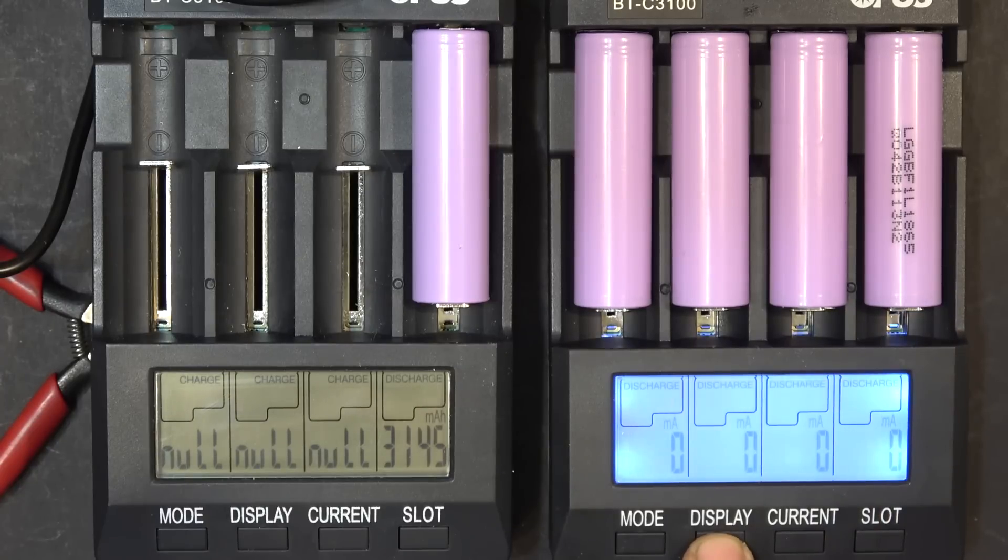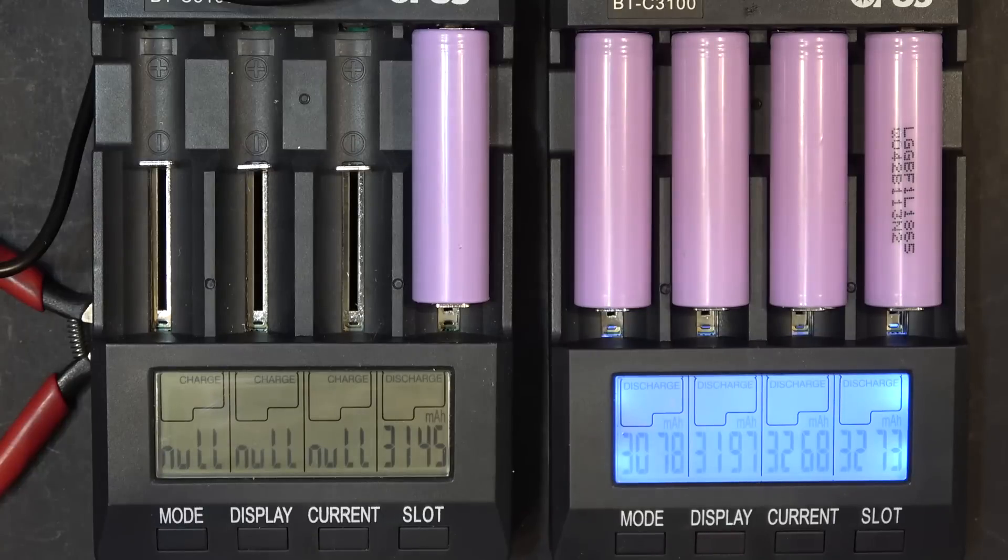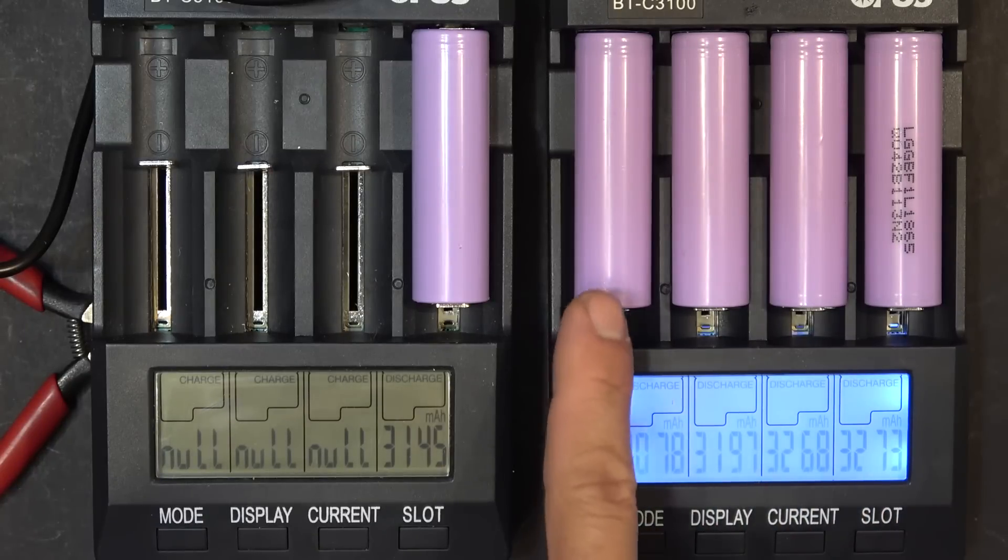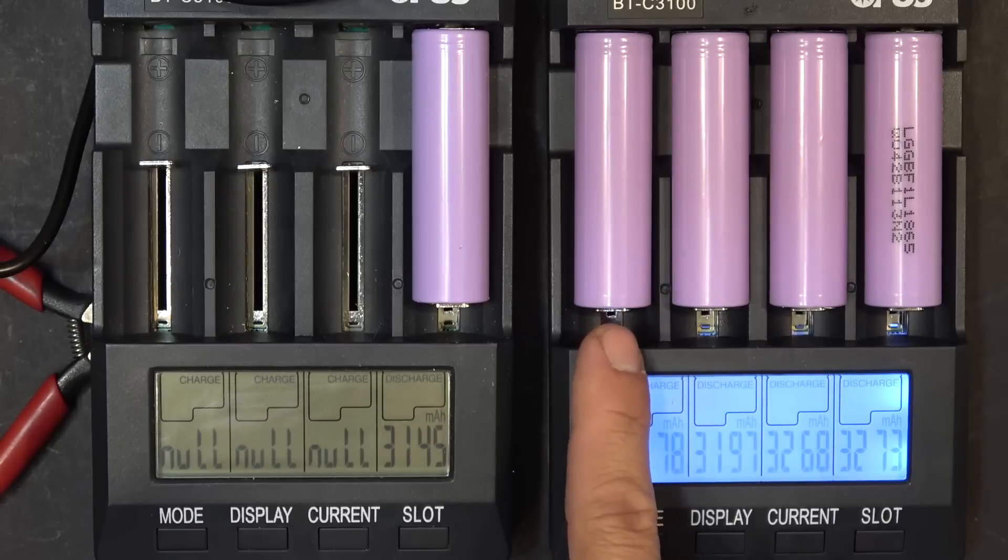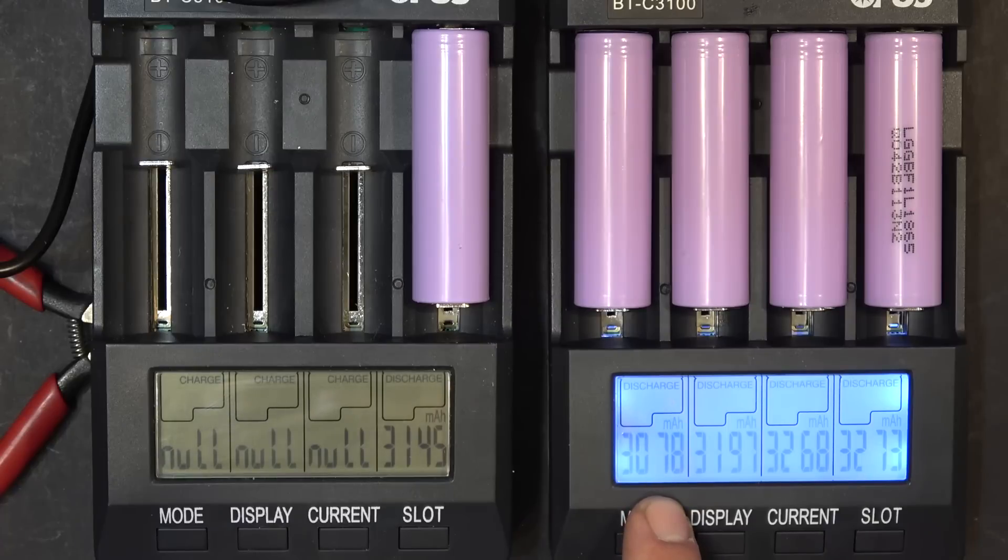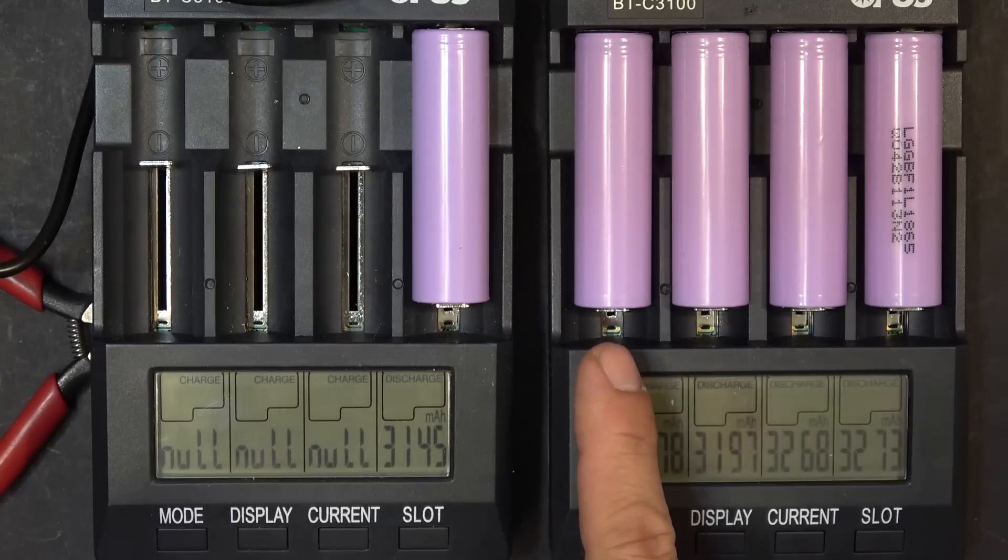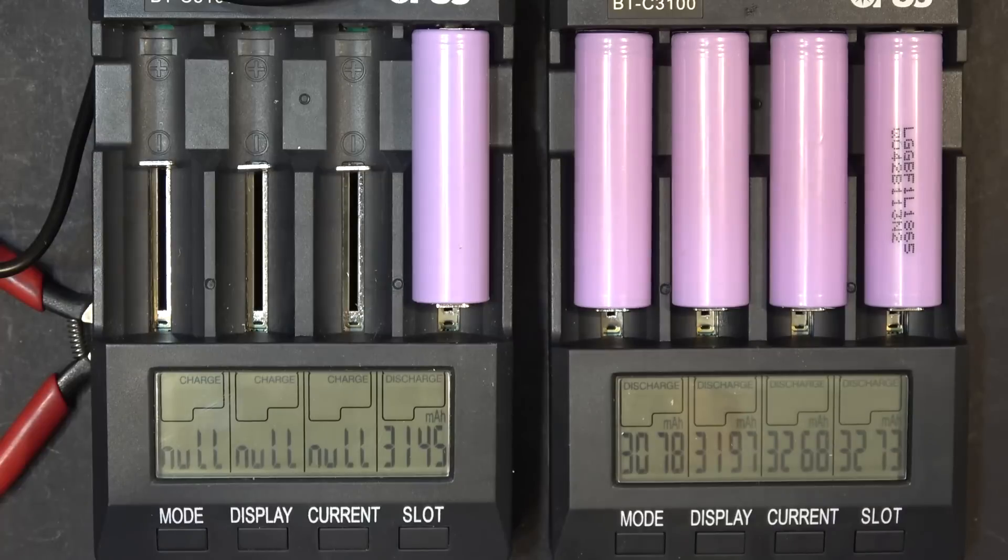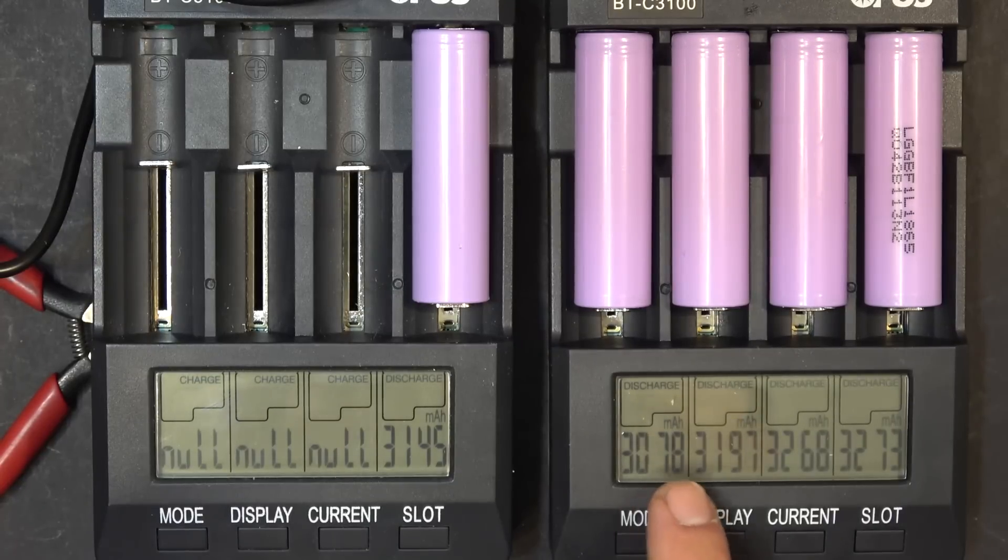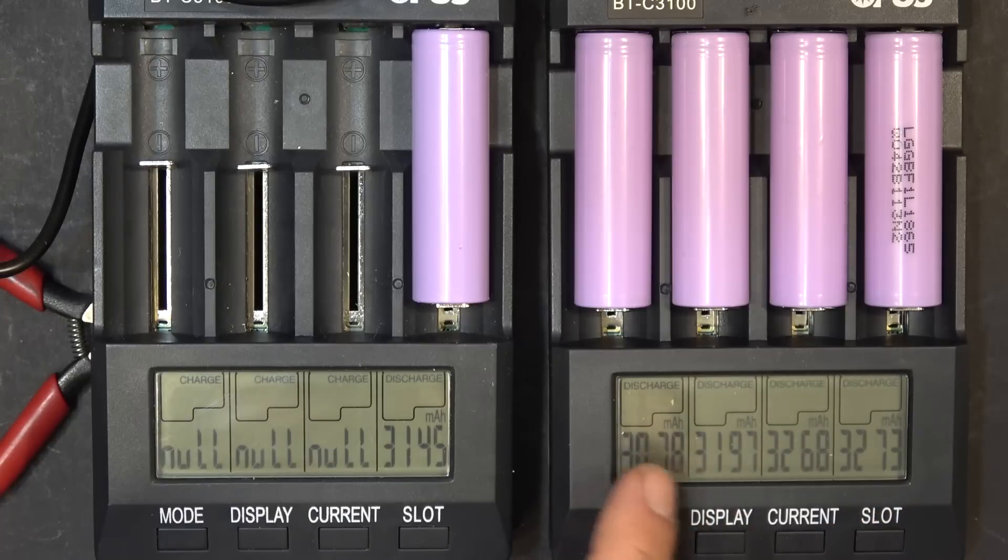But the strange thing is that I would expect that the one that is slowly discharged would have more capacity, but it looks like it's the other way around. It looks like the one that's got the lowest discharge rate got the lowest capacity. You can see the trend here, it does increase from left to right.